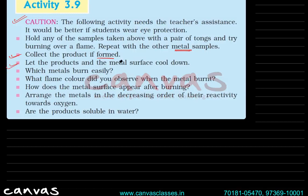Let the products and the metal surface cool down. Now observe: did the flame change color for different metals? If the flame changed color, in which case did sodium show a different color from magnesium? Note whether the flame color changes from metal to metal.